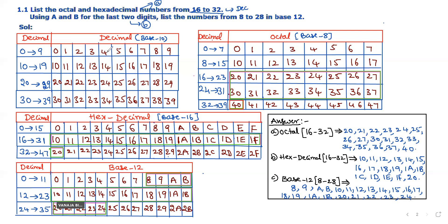First we should prepare different tables depending on the type of number systems. The first table is the decimal number system with base or radix 10. Base or radix 10 means the total decimal digits should be 10, starting from 0 up to 9. With these digits 0 to 9, we can write any decimal number. The table represents sequences 0 to 9, 10 to 19, 20 to 29, 30 to 39, and so on.